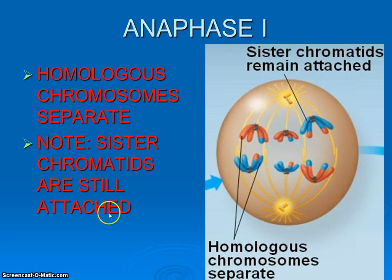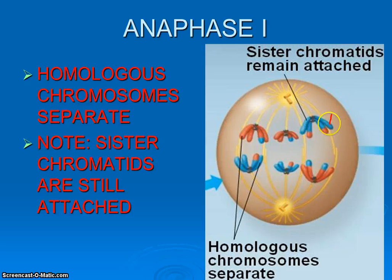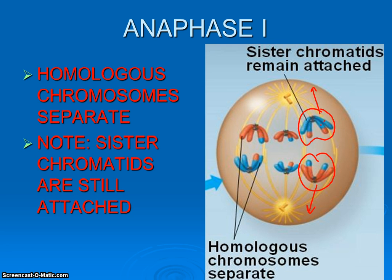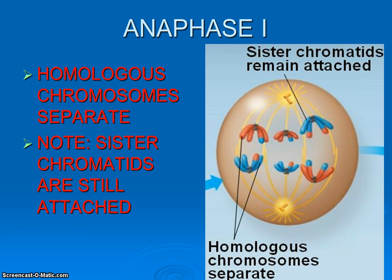After metaphase, we transition into anaphase one. Just like in mitosis, anna, away, apart. In mitosis, our chromatids were separated to opposite ends of the cell — we were literally ripping apart our sister chromatids. But notice that didn't happen here. Here we're separating the homologous pairs. This entire chromosome — both copies — travels to one side, and this entire chromosome travels to the other side. Notice it looks like this one was dipped in red paint, this one in blue on the ends — that's because they crossed over back in prophase one. Our whole entire chromosomes, with sister chromatids still attached, move to opposite ends of the cell.